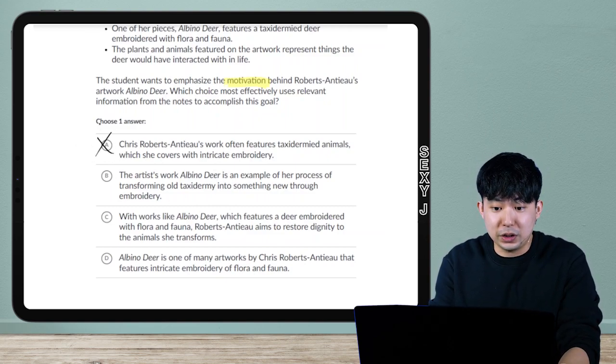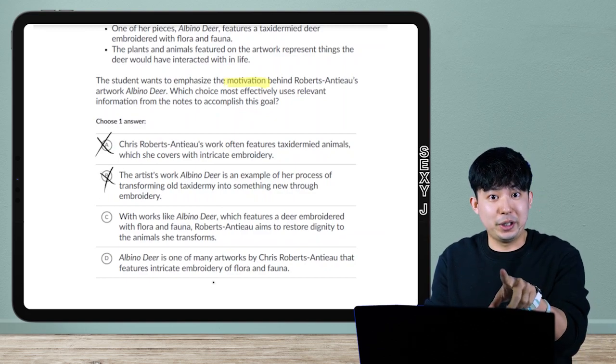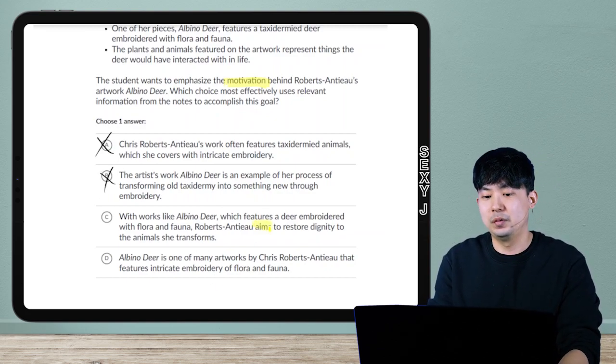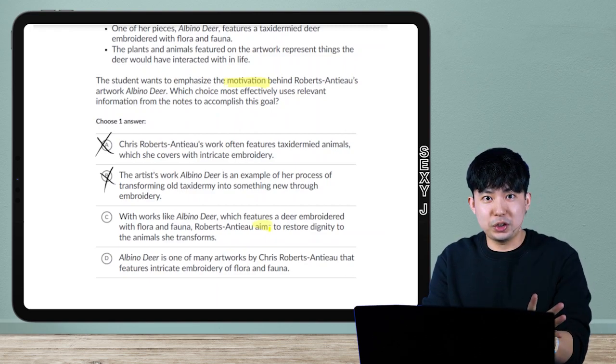Is it A? No, that's a finding. Is it B? Okay, you guys found it, right? What's the word? What's the word in answer C? Aims. That's it.